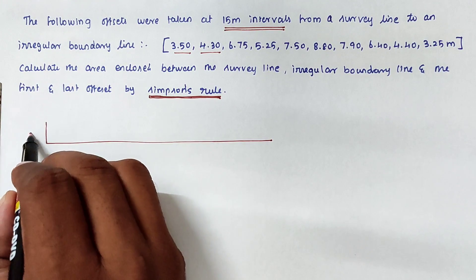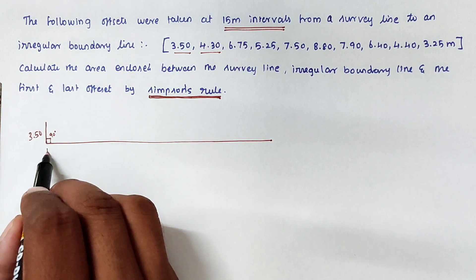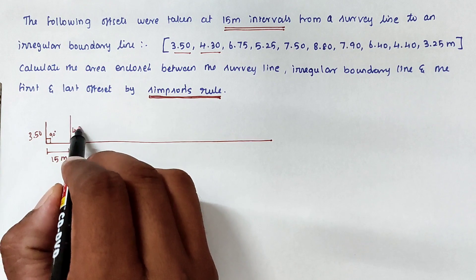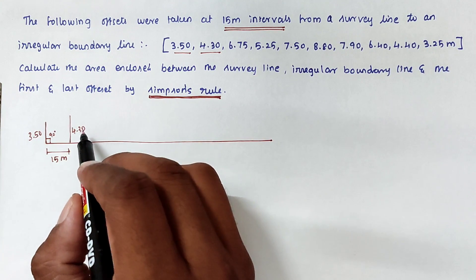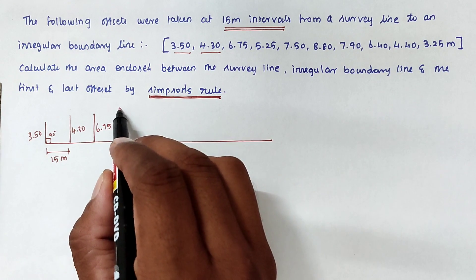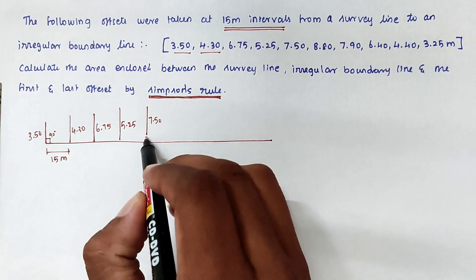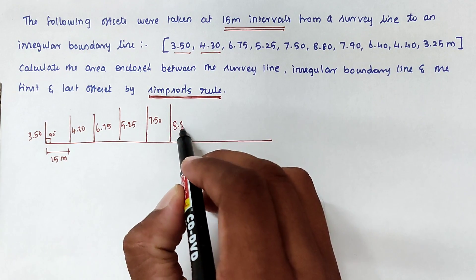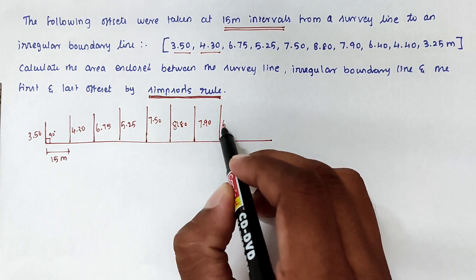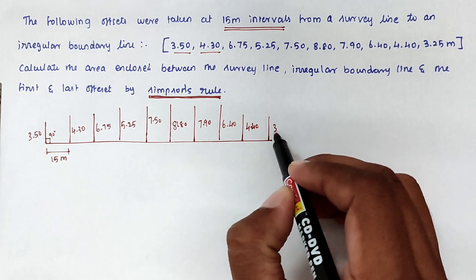The first reading is 3.50. These are all offset points at 90 degrees perpendicular to the survey line. Then every 15 meters we have another offset point: 4.30, then 6.75, then 5.25, then 7.50, then 8.80, then 7.90, then 6.40, then 4.40, and the last one is 3.25.